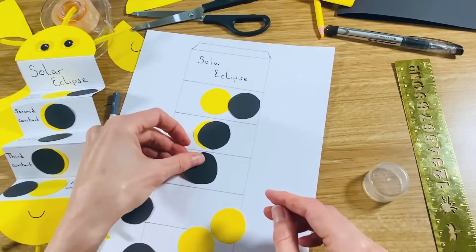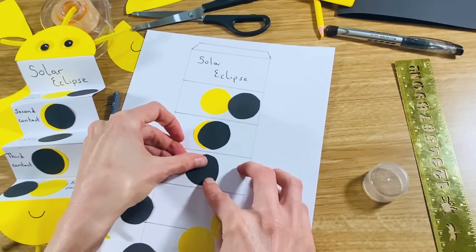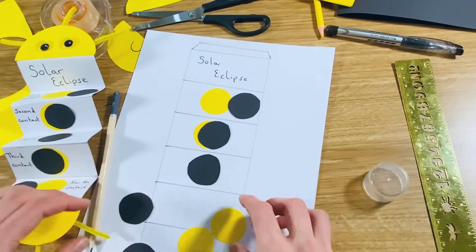Third stage, we've got our total eclipse, so the sun has been blocked out.